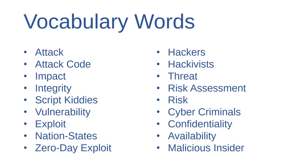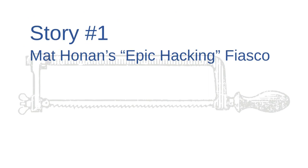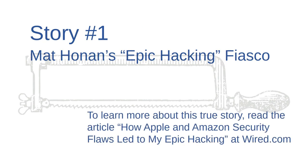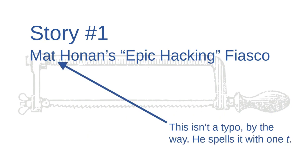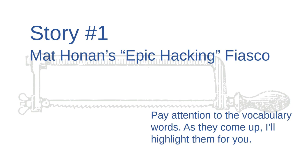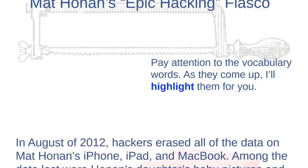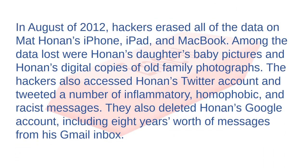The first story I'm going to tell you is true. It's about a journalist named Matt Honan who was hacked by an anonymous cyber criminal. You can read about it in more depth at wired.com — the story is titled 'How Apple and Amazon Security Flaws Led to My Epic Hacking.' This isn't a typo — he spells Matt with one T. Pay attention to the vocabulary words as they come up; I'll highlight them for you.